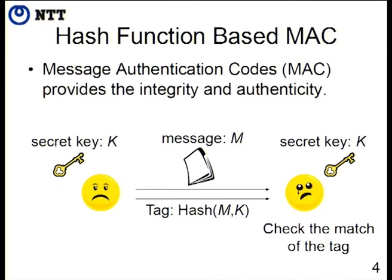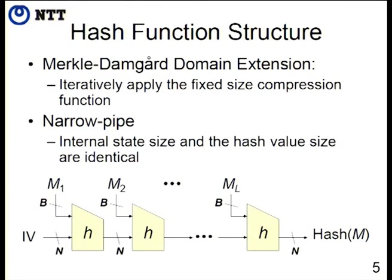In this paper, we analyze hash function-based MAC. This is the hash function structure which is the target of the paper. The first property is the Merkle-Damgård domain extension — the compression function is iteratively applied to compute the hash value. Another property is the narrow pipe structure, meaning the size of the internal state and the size of the hash value are the same. Most widely used hash functions fall into this category, like SHA-1, SHA-2, MD5, RIPEMD — almost all of them have a Merkle-Damgård narrow-pipe structure.